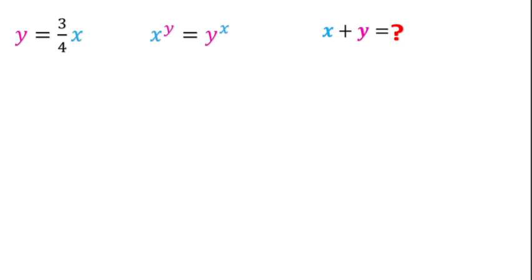Welcome to Definite Mind. In this question, it is given y equal to 3 over 4x, and x to the power y equal to y to the power x. We have to find the sum x plus y. I will solve this question using two methods in this video, so watch this video till the end.